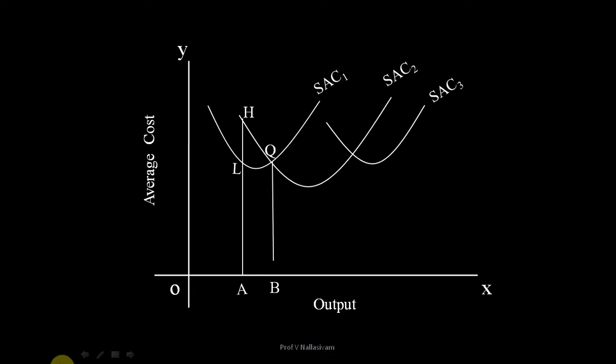Draw the line BQ. Note, at point Q, SAC1 intersects SAC2.